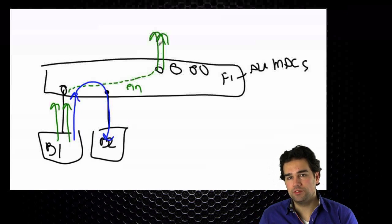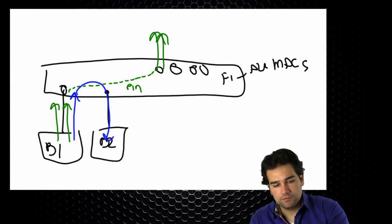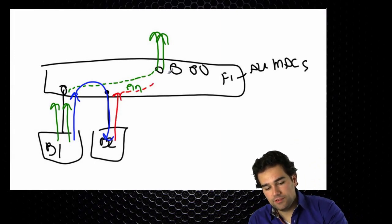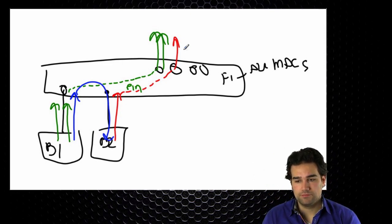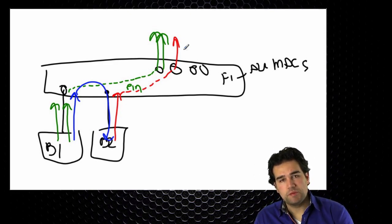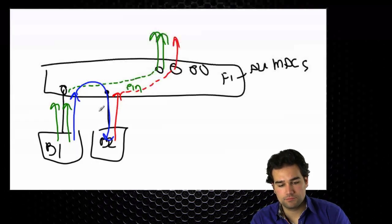Each network interface card in the blades is pinned to a certain uplink — always a one-to-one mapping. The next blade sends a packet that needs to go out on an uplink, and I pin that to maybe another uplink. That's how I load balance across several logical links. This is static port pinning — it stays there until something happens. The only local switching supported is server-to-server traffic, and there is no shared connection between FI-A and FI-B.